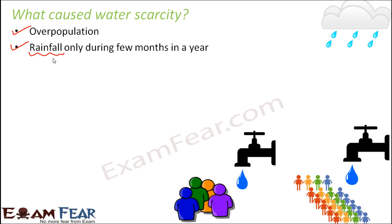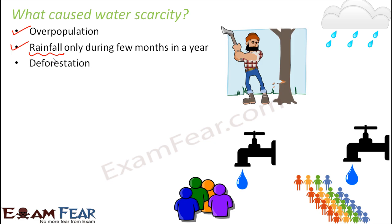If it doesn't rain at a particular place for one complete year, there will obviously be water scarcity because no water came from rainfall during that year. So lack of rainfall is another cause. Deforestation is another cause, and here human beings again play a very important role. Deforestation means cutting down trees for human benefit.